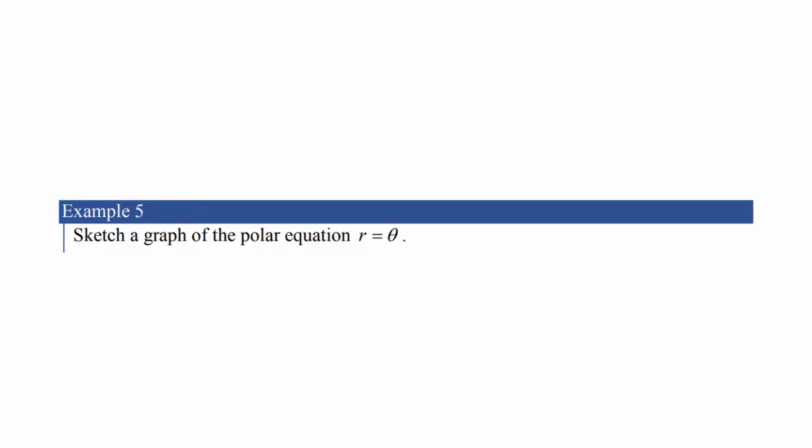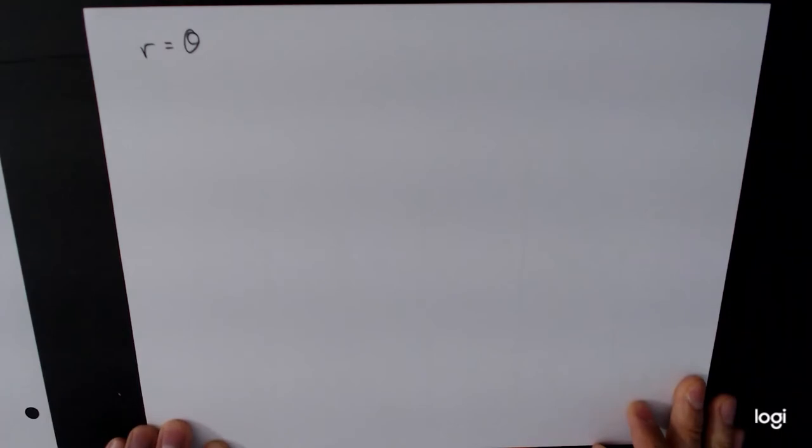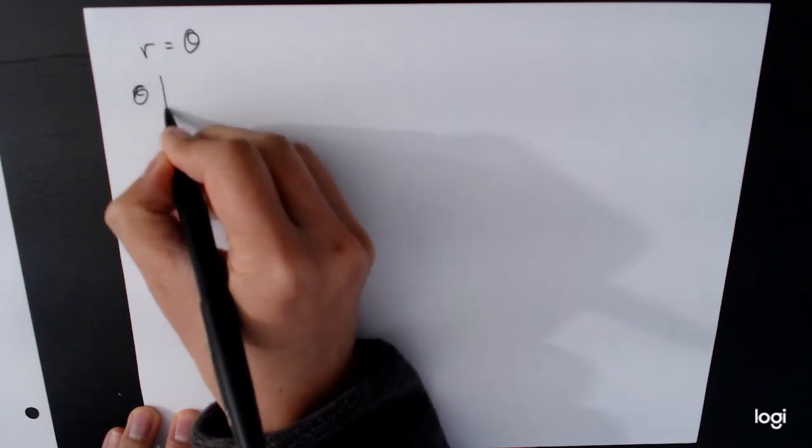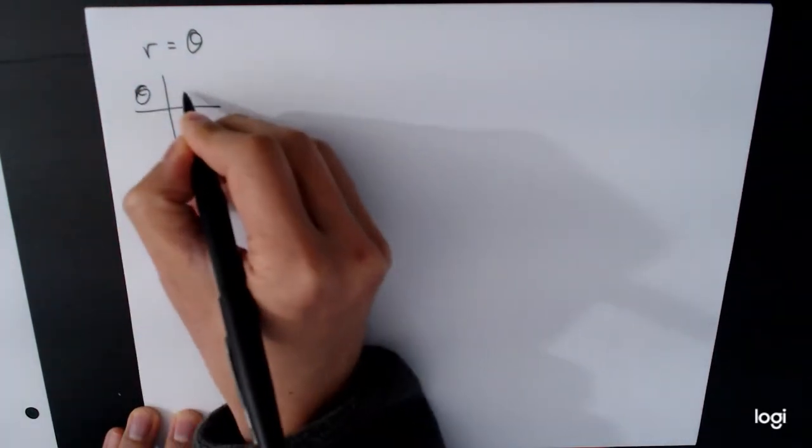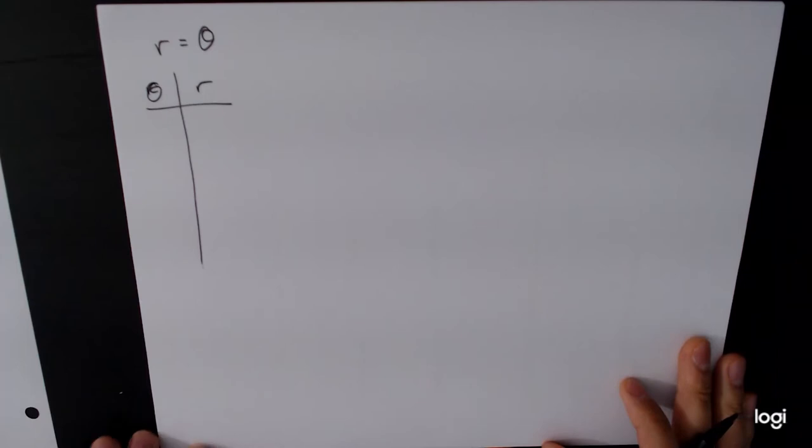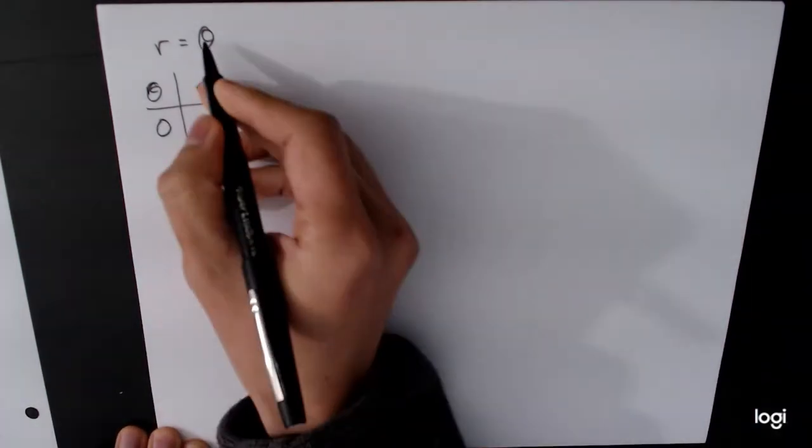Sketch a graph of the polar equation r equals theta. So our equation r equals theta, what are we going to do with this? Well, what we're going to do is we're going to think of values of theta and then get values of r. Now traditionally, we just sort of think of values between 0 and 2π. Sometimes we need more points, sometimes we don't need as many points.